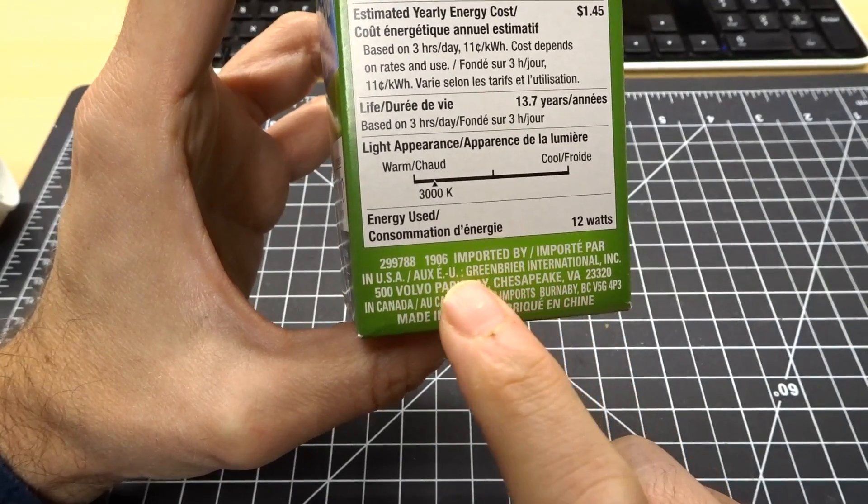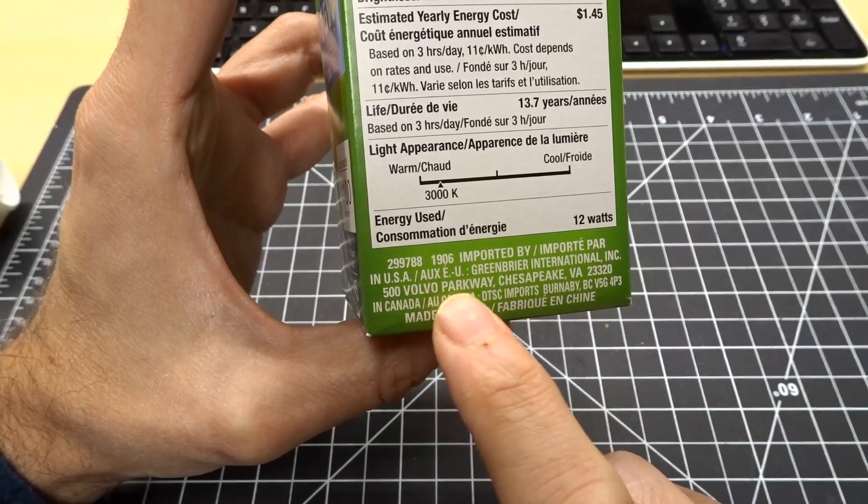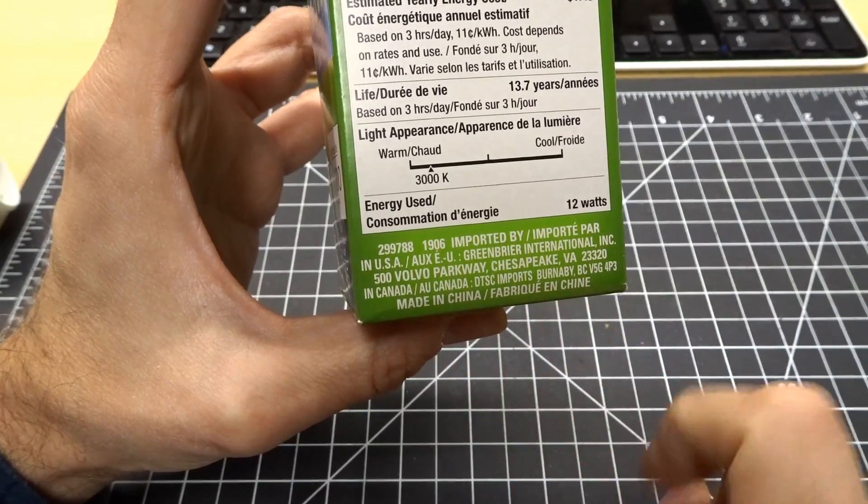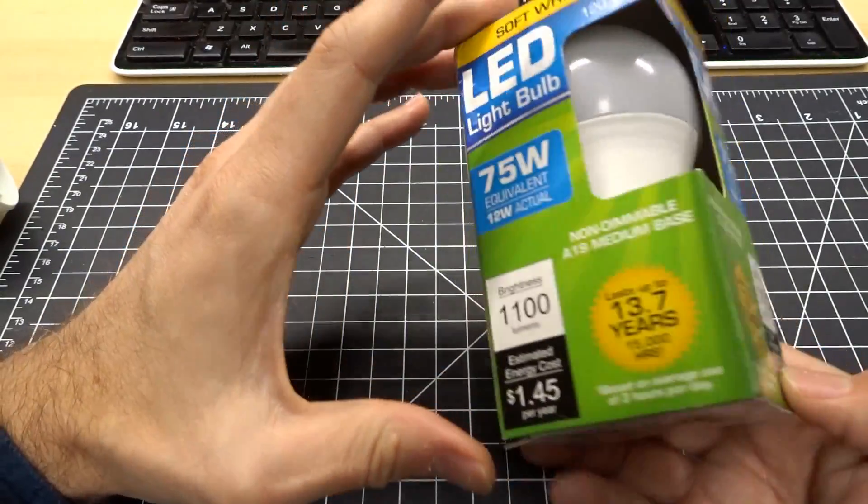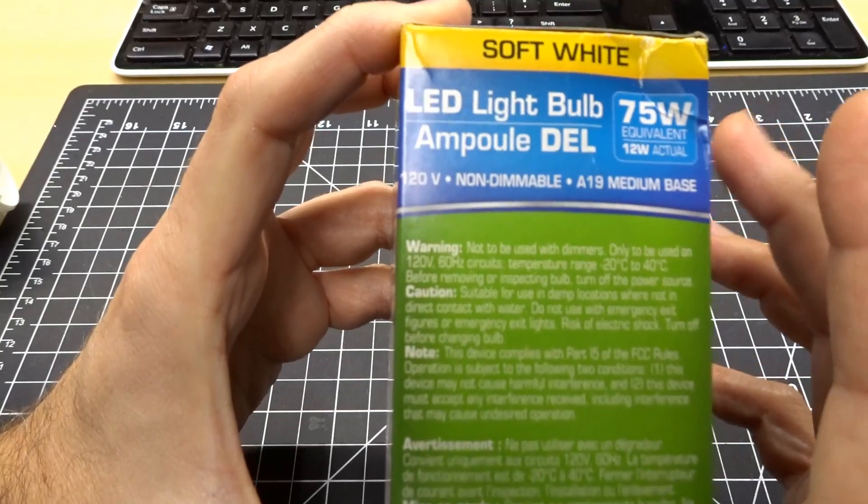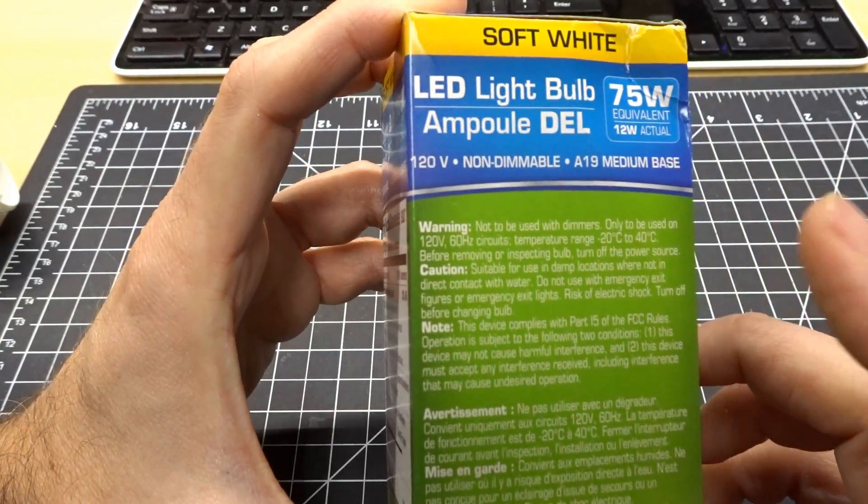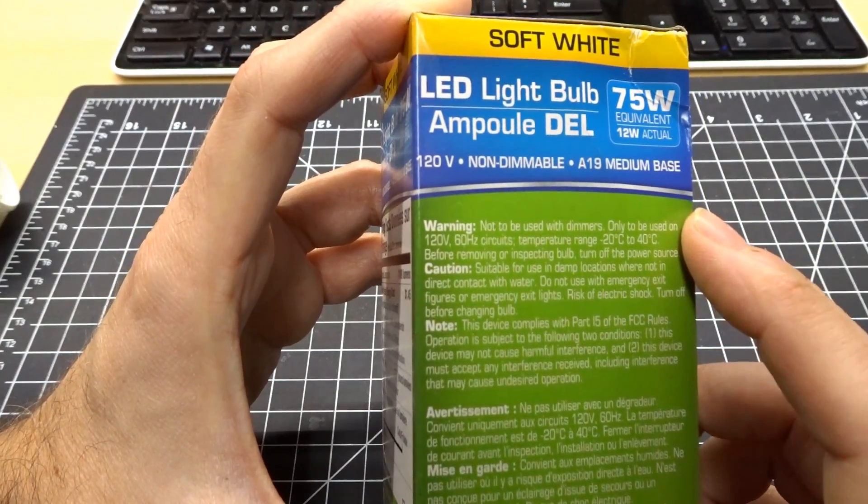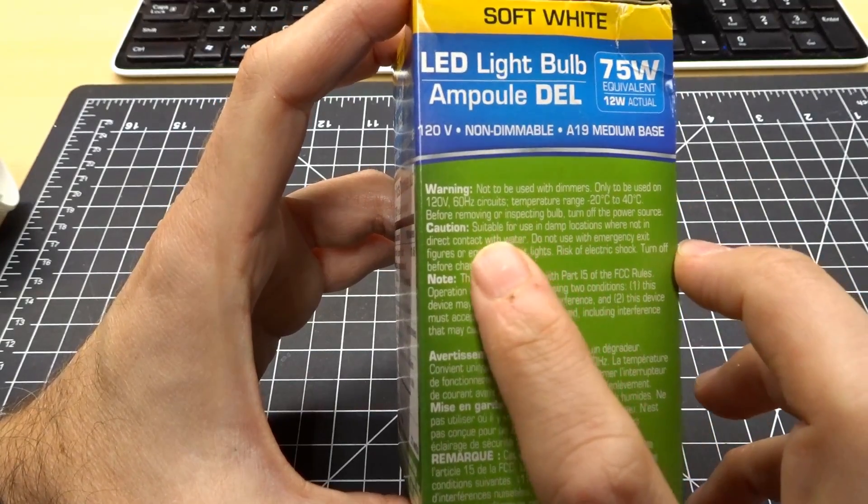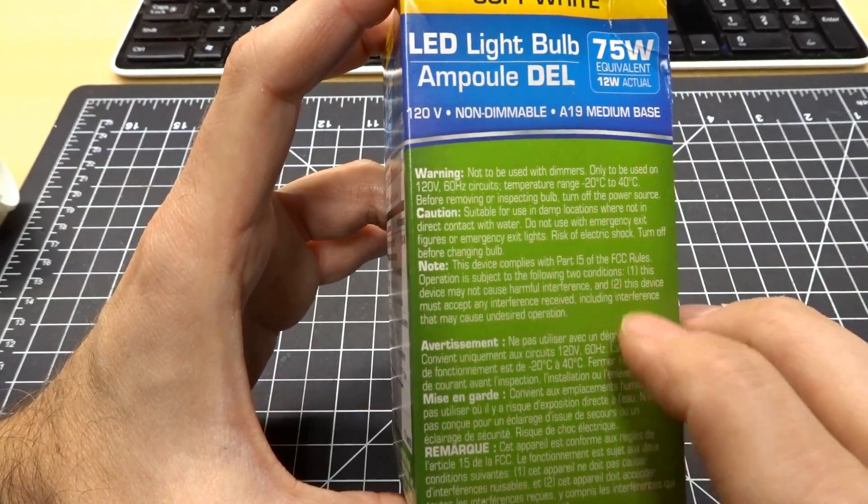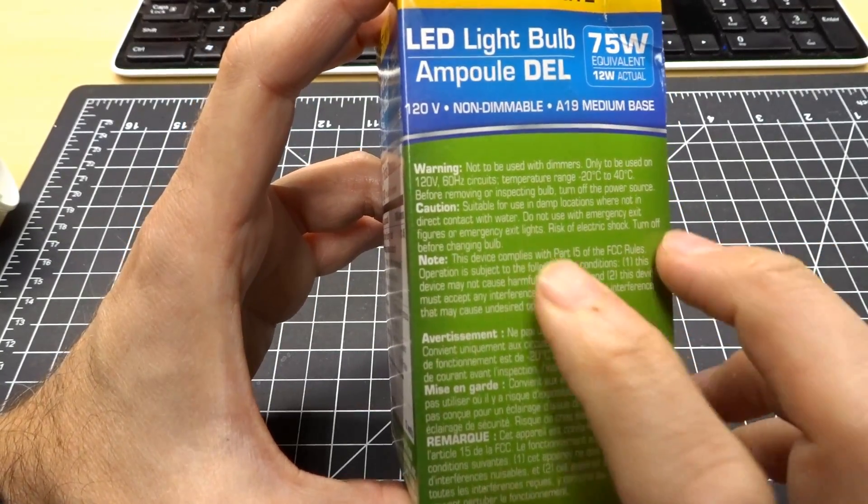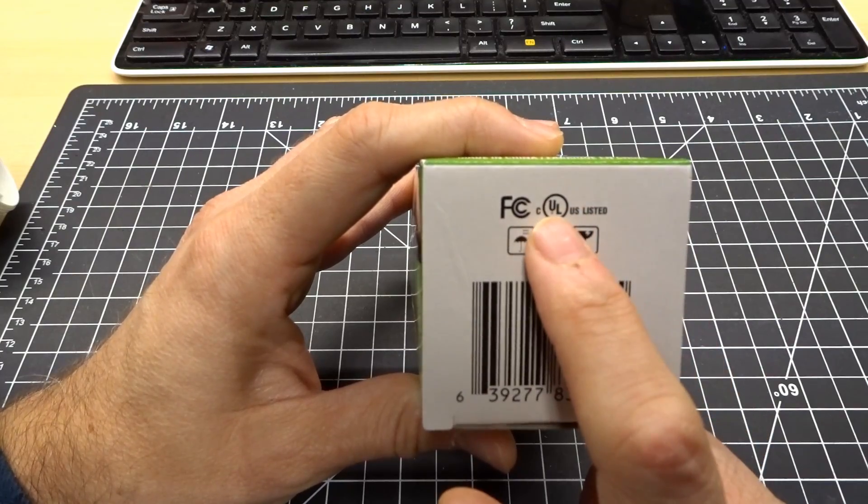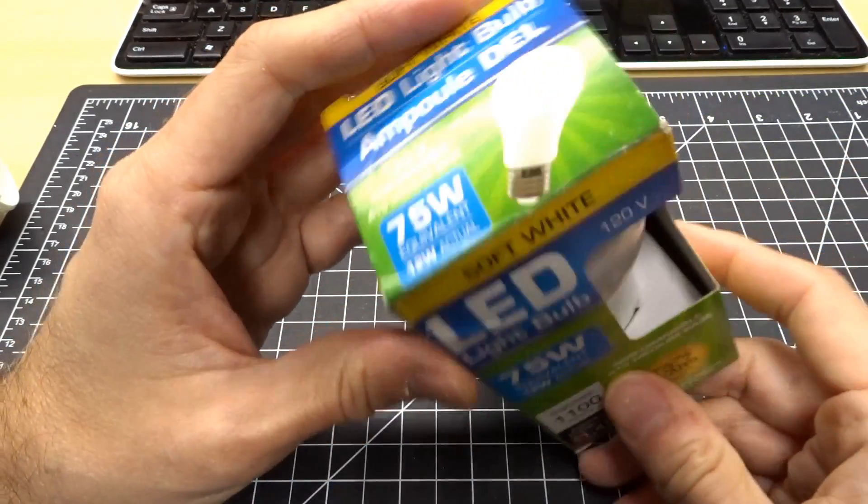Of course, the bulb is made in China, where else would it be made considering it's so cheap? So interesting is in the United States, it says that this bulb was imported by Greenbrier International on 500 Volvo Parkway in Chesapeake, Virginia. And yet in Canada, a different import company, DTSC imports in Burnaby, British Columbia. So funny that the packaging is universal for two different importers. Warning messages say not to be used with dimmers again and only to be used at 120 volts, 60 Hertz. So not a universal power supply. At least it doesn't say it is. And unfortunately, I have no way to test 240 volts. Suitable for use in damp locations. So that's cool. Don't use in emergency exit fixtures. Well, that's a safety regulation and no consumer bulbs should be used in those. It claims on the bottom of the package that it's FCC and UL listed, UL in both US and Canada. Don't know if that's for real or not, but I guess it might be.